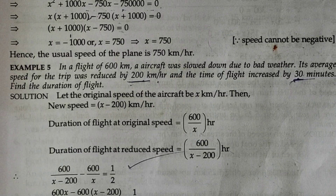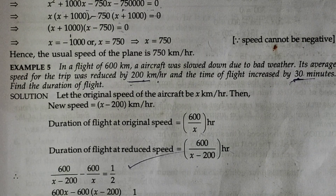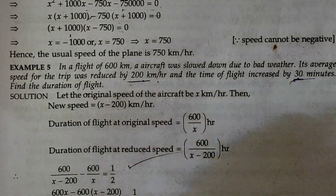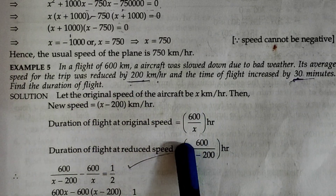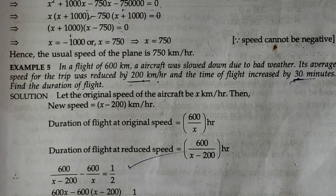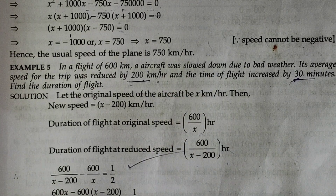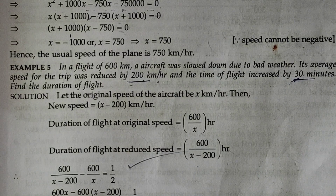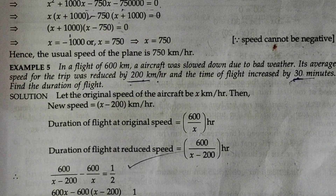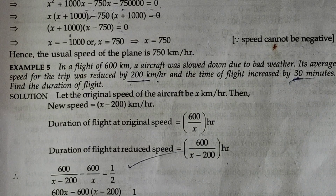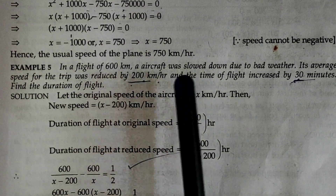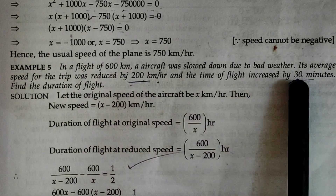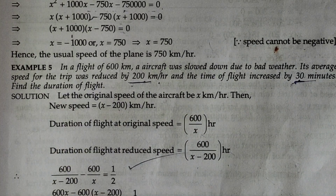So, time taken is defined as distance divided by speed. Why should we solve this question? The unknown is the speed of the flight. So, we give a variable to the speed of the flight. This is a 5-mark question. We will define the variable, solve a relationship, and form an equation. The total distance is 600 km, speed is reduced by 200 km/h, and time is increased by 30 minutes. Find the duration of the flight.